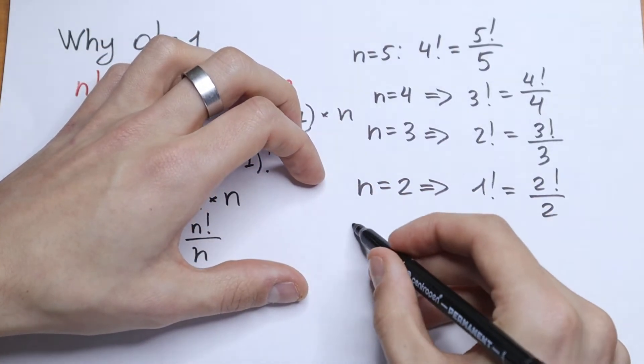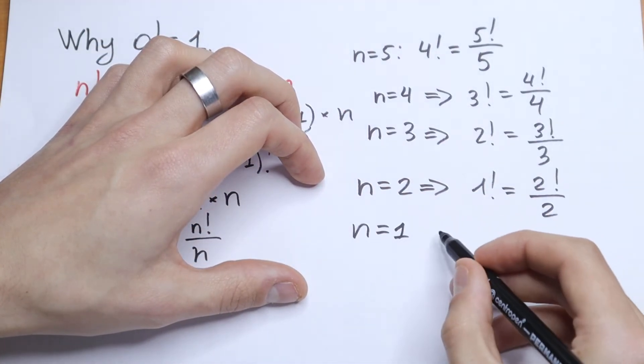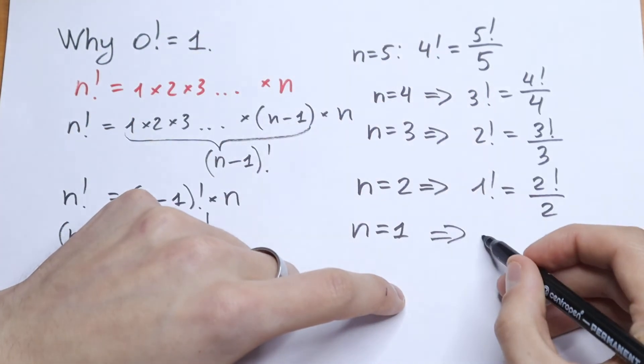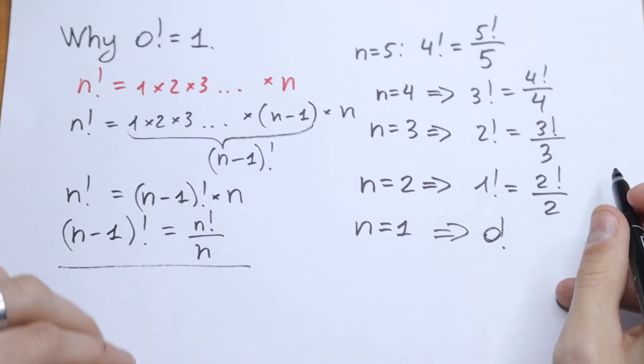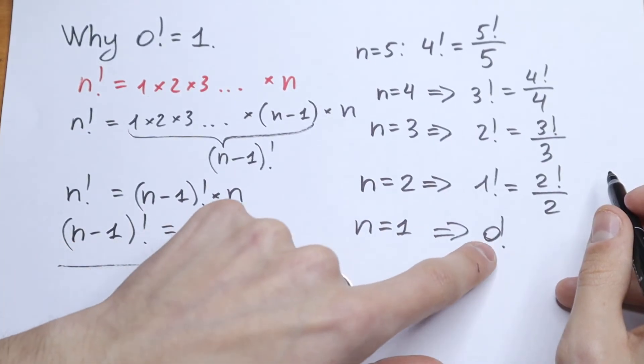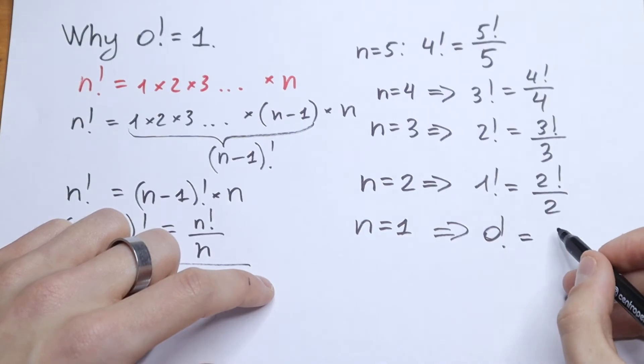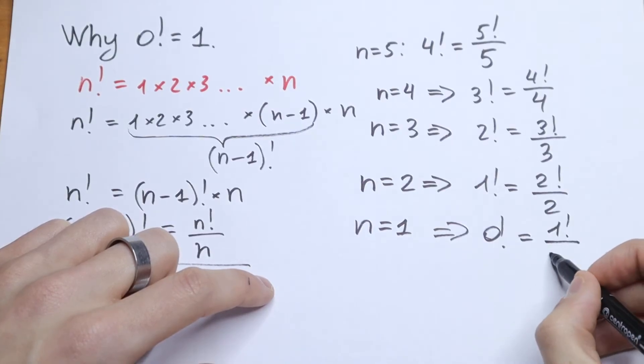the step that we need. n equal to 1. And we will have our case. So as you can see 4, 3, 2, 1. This will be 0 factorial. And we have a formula. If we plug in 1, we will have that 0 factorial equal to 1 factorial over 1.